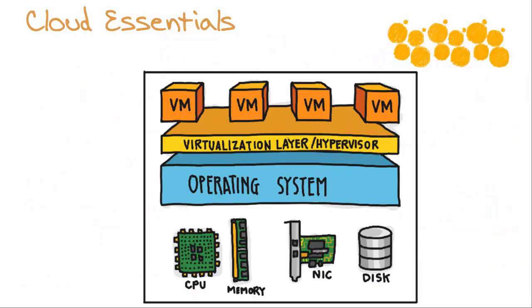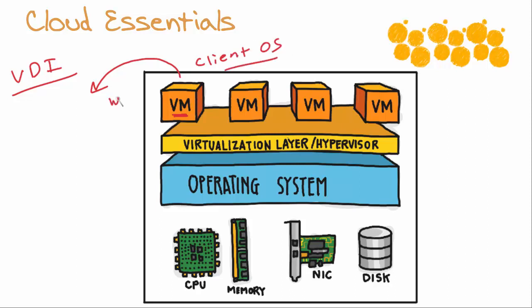Server virtualization can lead to another neat virtualization trick called the virtual desktop infrastructure. What we do is spin up a VM that isn't a server — the VM we spin up is going to be a client operating system. Maybe it's Windows 10, for instance, that we spin up in the cloud, and then we deliver it over a network to what we refer to as a thin client. A desktop machine that's not running a client operating system gets the client OS dynamically from the cloud, and that appears on the screen for the user. Their operating system is actually working up in the cloud, and it's just being presented to them down on their machine.